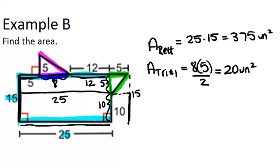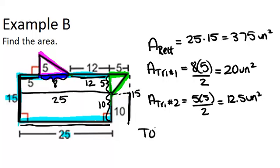So both the base and the height of that triangle are 5 each. So the area of triangle number 2 is 5 times 5 base times height divided by 2, which is 12.5 units squared. Therefore, our total area will be the sum of all three of these areas: 375 plus 20 plus 12.5, which is 407.5 units squared.